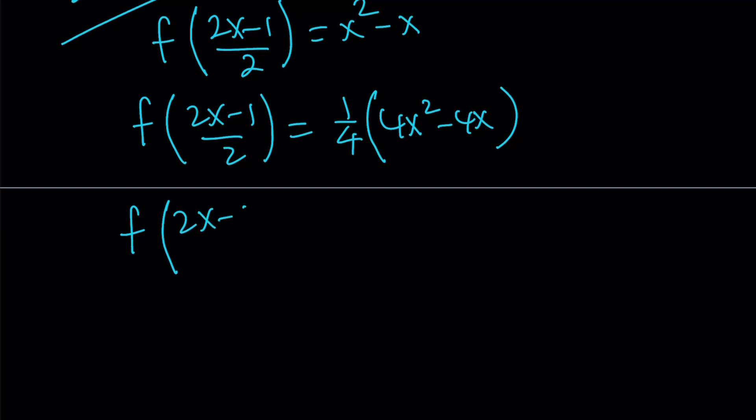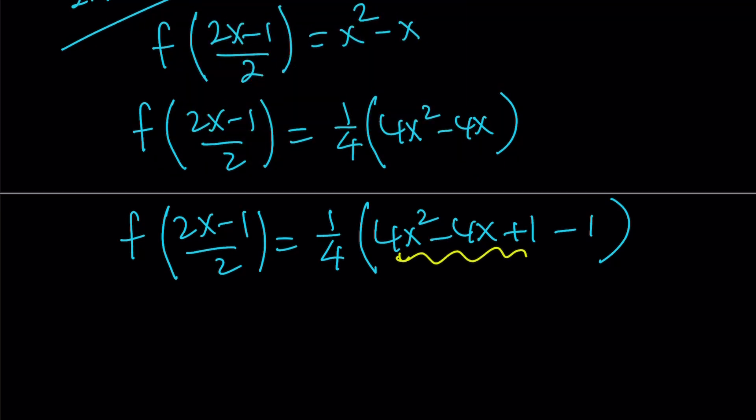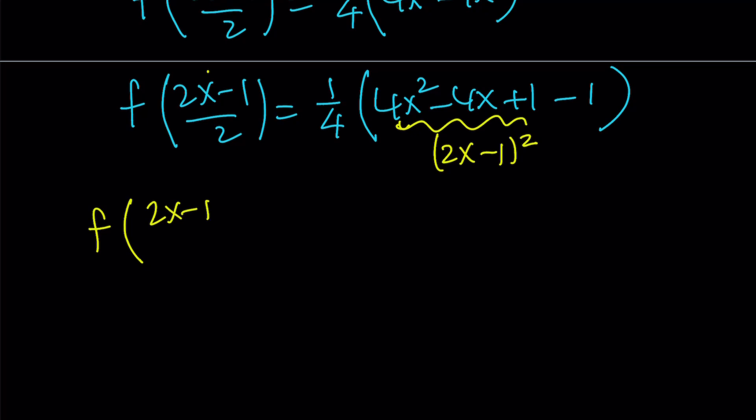So I'm going to write the 4x squared minus 4x as 4x squared minus 4x plus 1 minus 1. Why did I do the plus minus 1 here? Because this is a perfect square. And that just happens to be 2x minus 1 quantity squared. And we do have a 2x minus 1 here, which is awesome, right? So we get f of 2x minus 1 over 2 equals 2x minus 1 quantity squared minus 1 divided by 4.